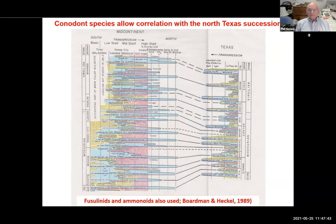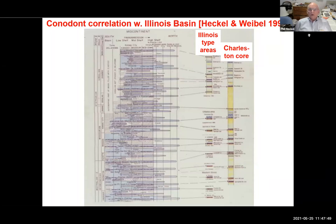This shows the same sea level curve in the mid-continent correlated with Illinois — the long Charleston Core on the right and the Illinois-type areas on the left.